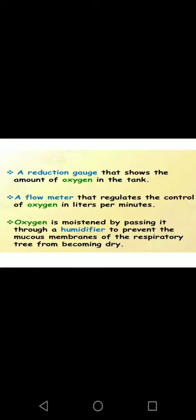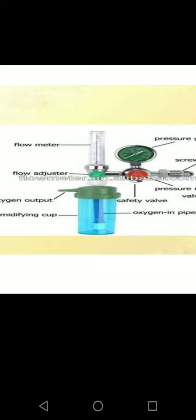A detection gauge shows the amount of oxygen remaining in the tank. A flow meter regulates the flow in liters per minute. Oxygen is moistened by passing it through a humidifier to prevent the mucous membranes of the respiratory tree from becoming dry. The flow meter also has a humidifying chamber, fluid adjuster, pressure gauge, and safety valve.